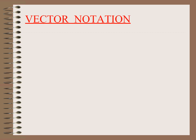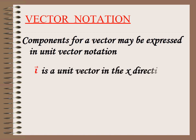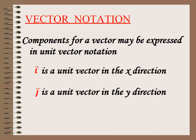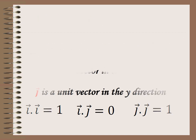Let us remember that the components of a vector are expressed in unit vector notation: i in the x direction, j in the y direction. We know that i·i = 1, i·j = 0 because i and j are perpendicular, while i and i are in the same direction. Also, j·j = 1.